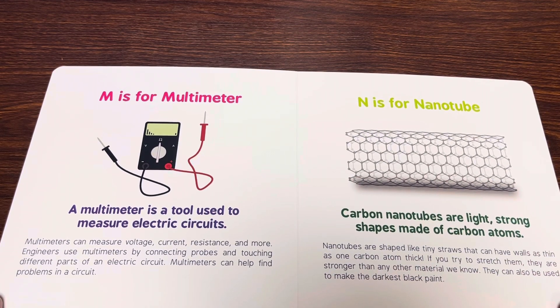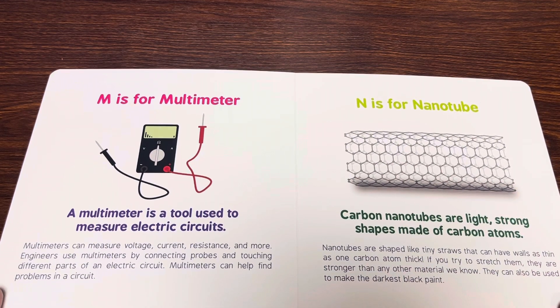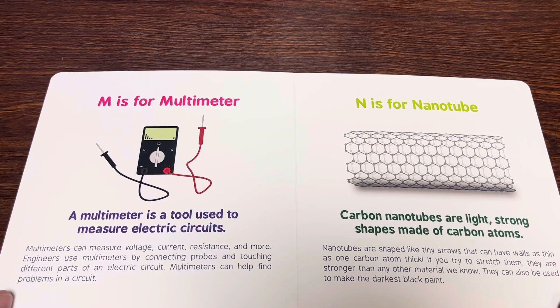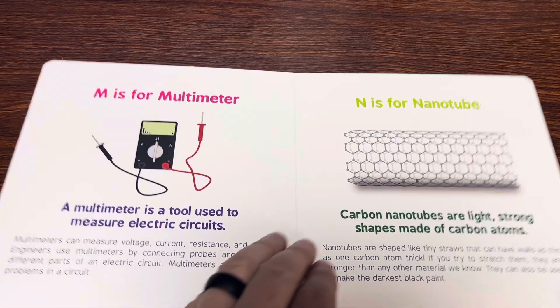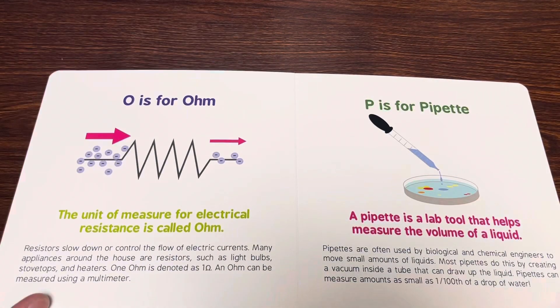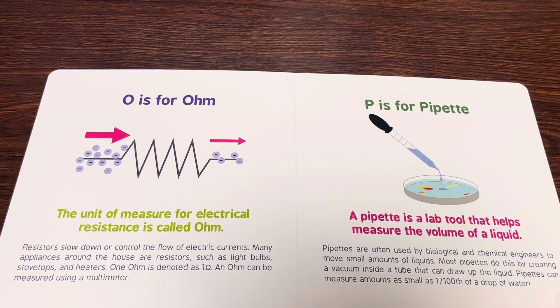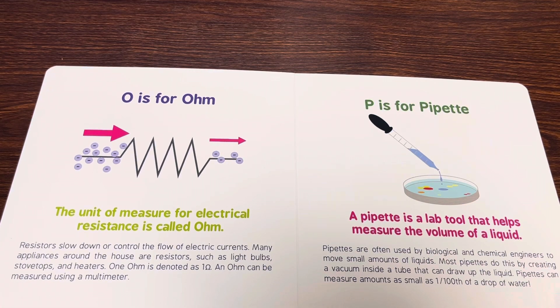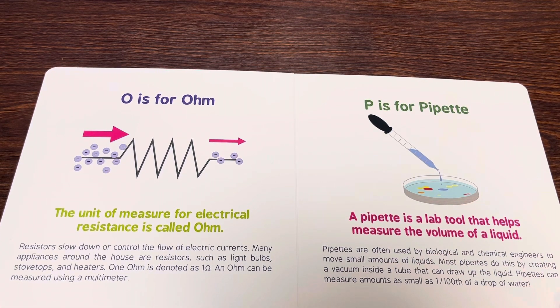N is for nanotube. Carbon nanotubes are light, strong shapes made of carbon atoms. O is for ohm. The unit of measure for electrical resistance is called ohm.